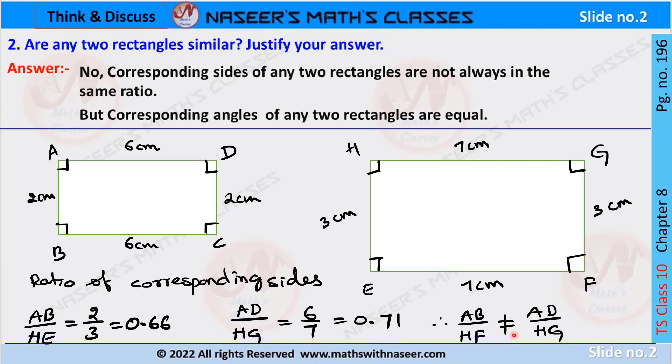0.66 is not equal to 0.71. Therefore, we can say AB by HF is not equal to AD by HG. So we can say that two rectangles are not always in the same ratio, but corresponding angles of any two rectangles are equal.